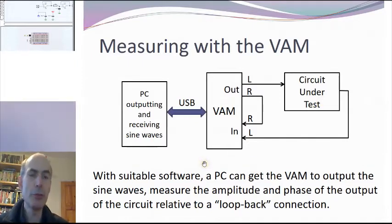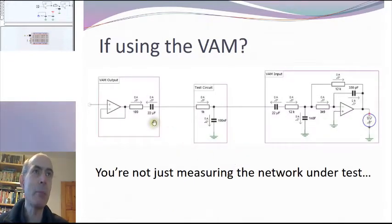Only slight problem with this is that the output impedance of the VAM and the input impedance of the VAM are even worse than the function generator and the oscilloscope. For the VAM output it looks something more like this, with an ideal voltage source, the op-amp driving through a 100 ohm resistor and 22 microfarad capacitor before it leaves the VAM.